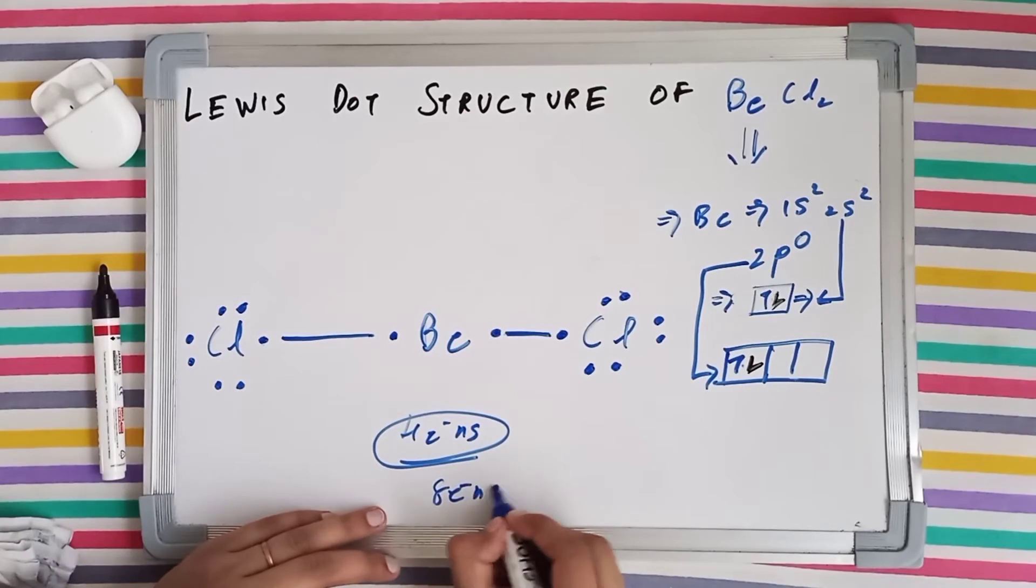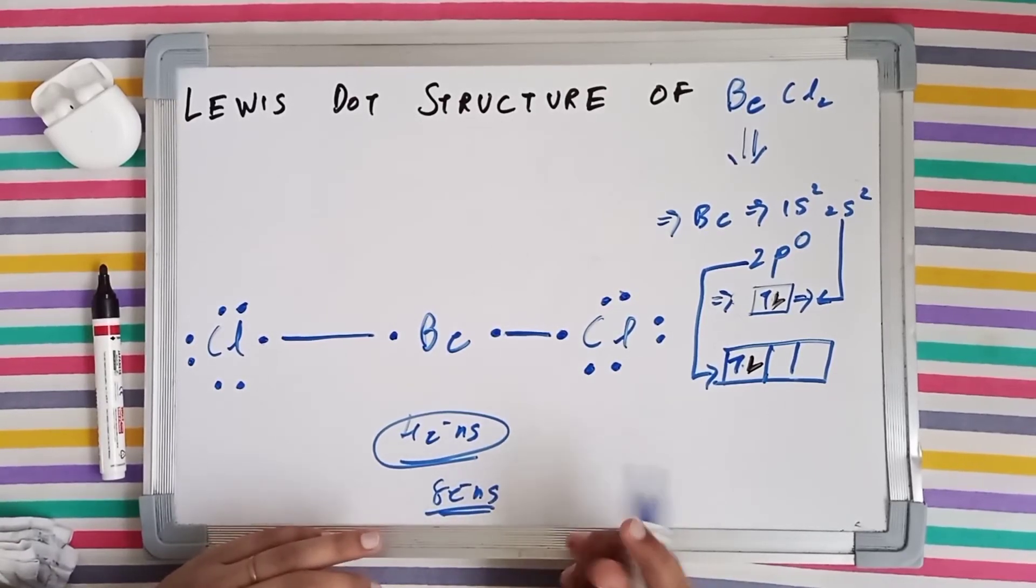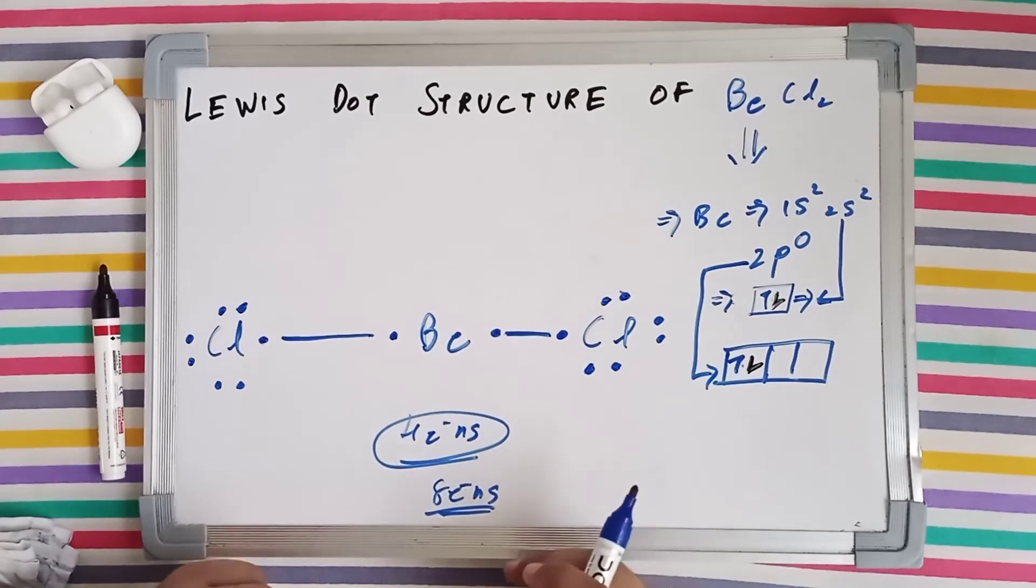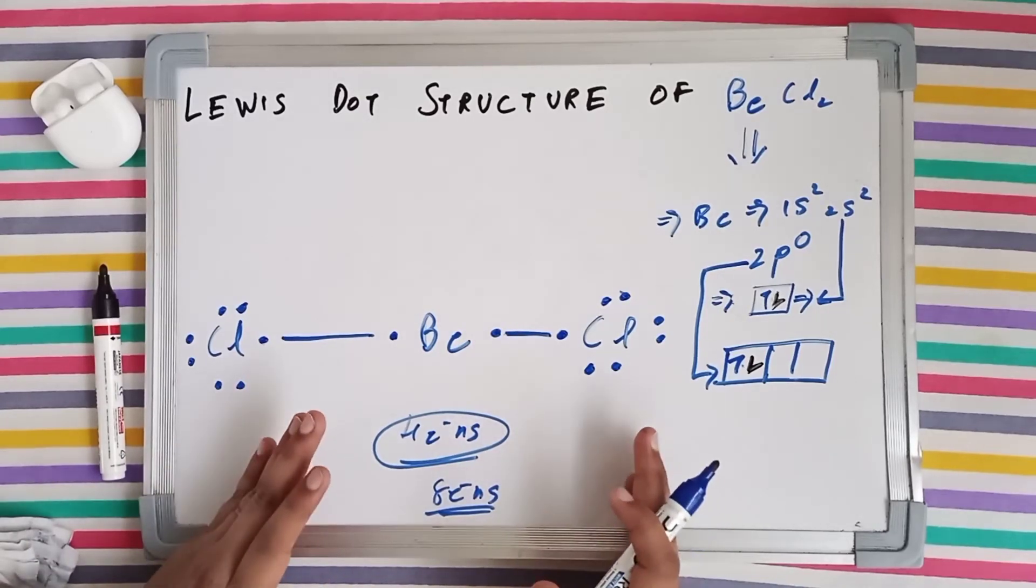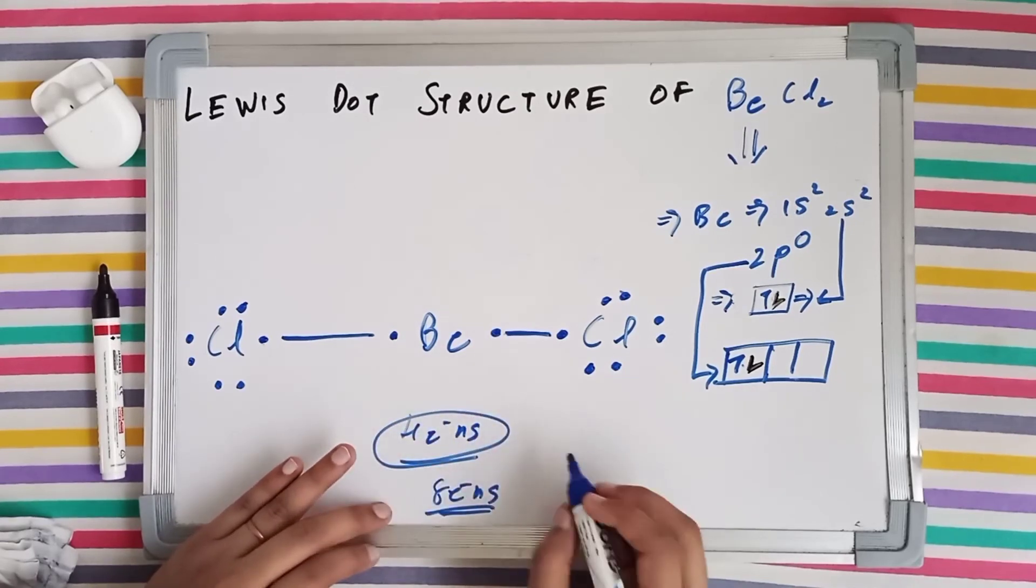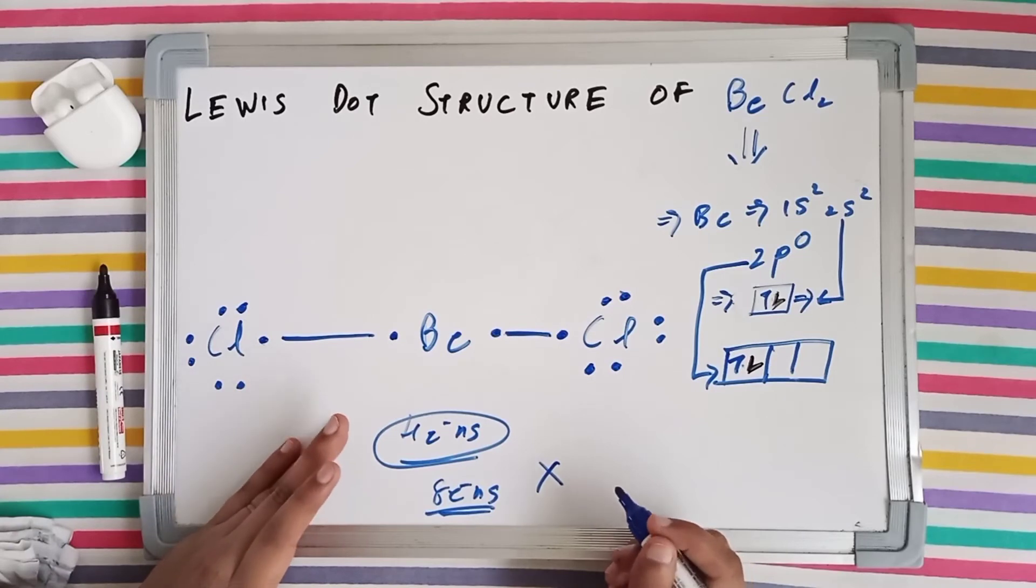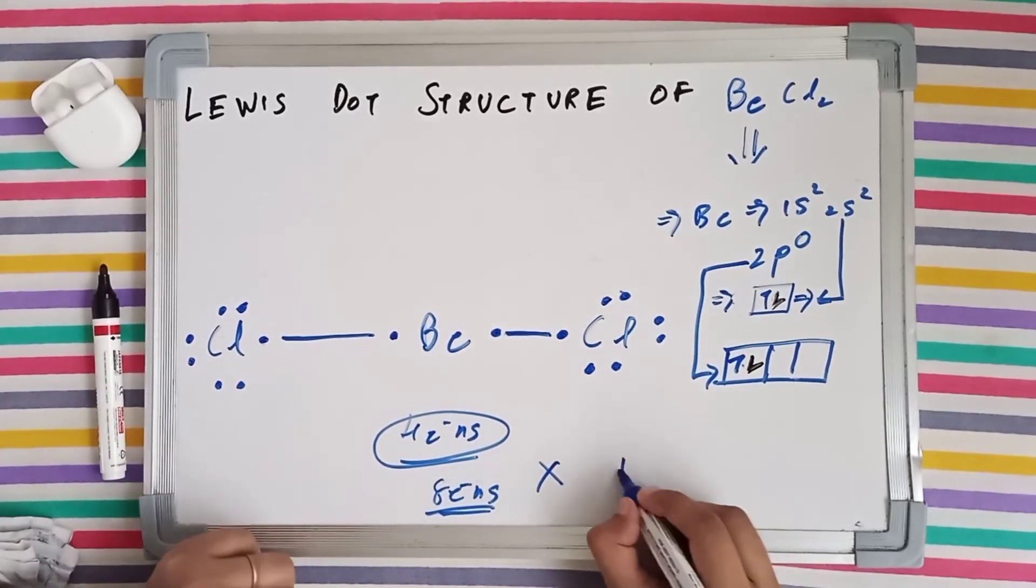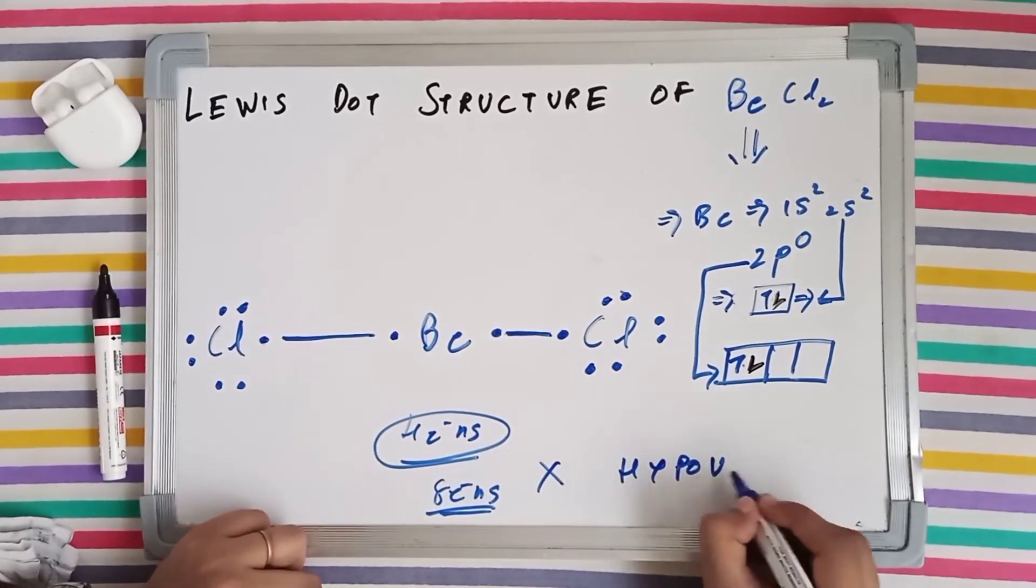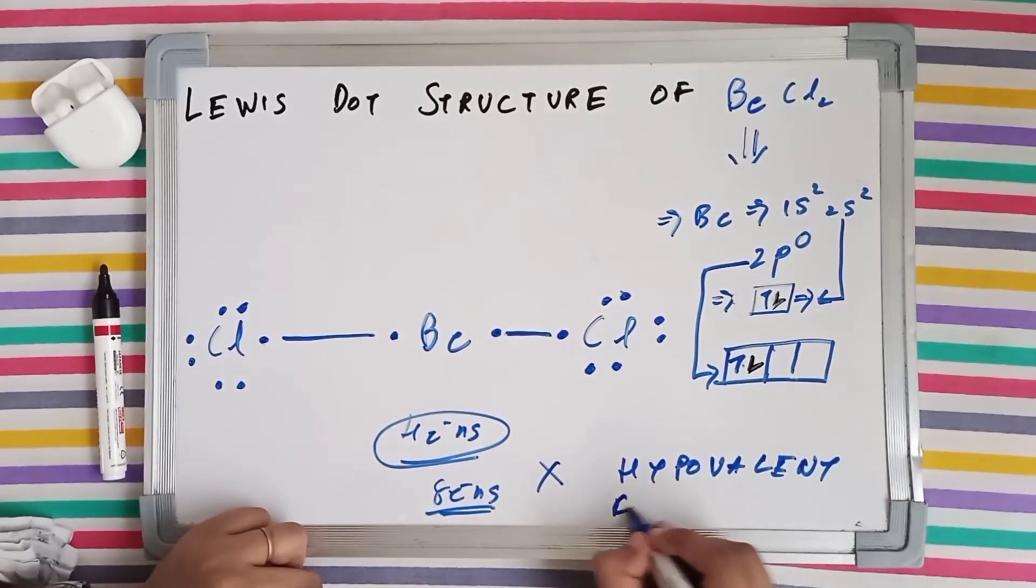It has not got 8 valence electrons after bond formation. According to Lewis rule, he said that each atom wants to complete its octet or duplet. But since we have got 4 electrons, therefore this particular molecule is an exception to Lewis octet rule. And also such compounds are called hypovalent compounds.